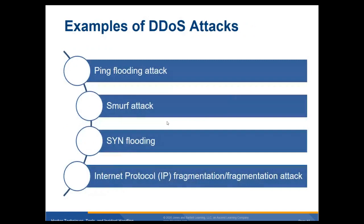Some DoS examples include ping flood, smurf attack, SYN flooding, and IP fragmentation attack. Ping flooding hits them with a large number of pings. A smurf attack is where you spoof your address, send out a ping to everybody, and they reply — but with your spoofed address being the victim's address, so they reply to the victim, not you. SYN flooding sends multiple synchronization requests like a three-way handshake but never replies. Fragmentation sends corrupt packets to crash the system.